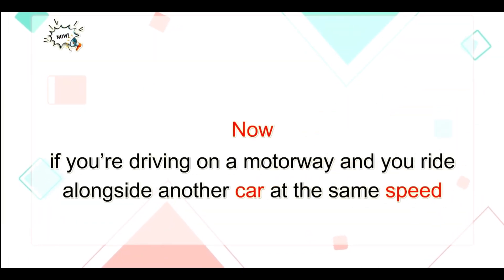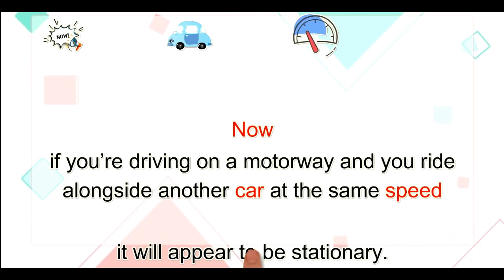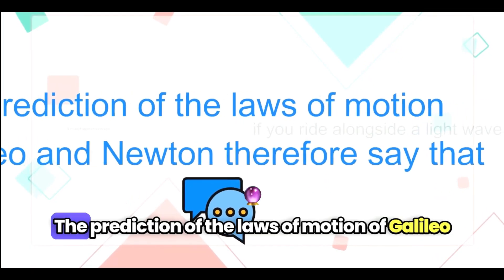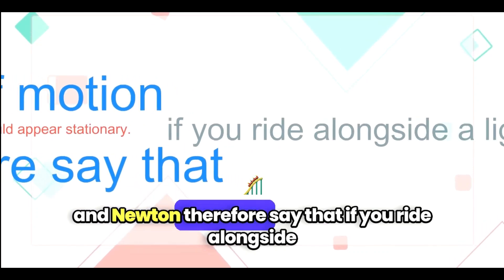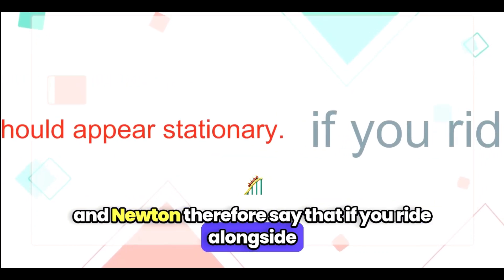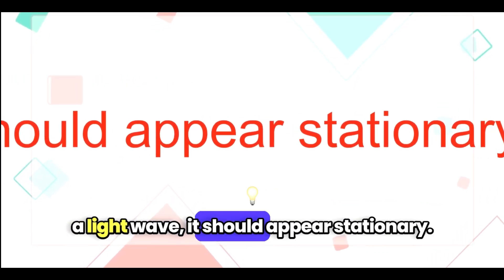Now, if you're driving on a motorway and you ride alongside another car at the same speed, it will appear to be stationary. The prediction of the laws of motion of Galileo and Newton therefore say that if you ride alongside a light wave, it should appear stationary.